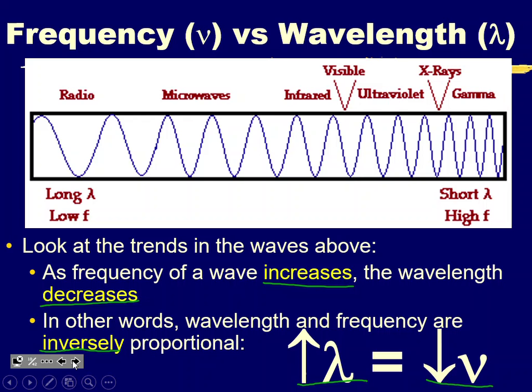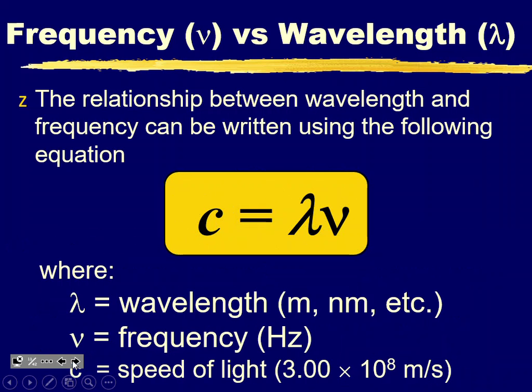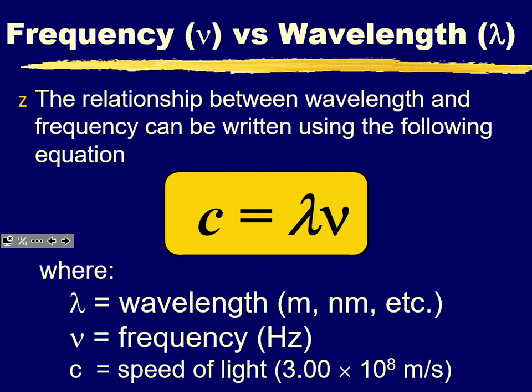The relationship between wavelength and frequency can be written in this equation — call it the speed of light equation. Wavelength times frequency always equals the speed of light, which is 3.00 times 10 to the eighth meters per second. If you know the wavelength, you can calculate the frequency, and vice versa. This will appear on your test and in the formal lab report.